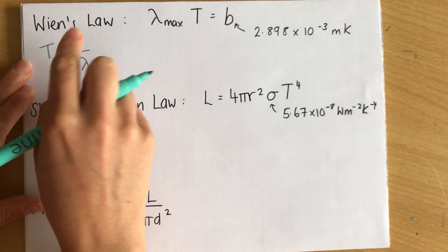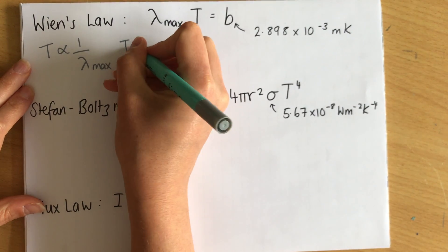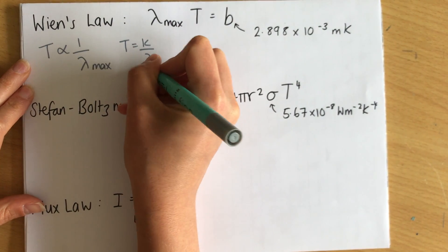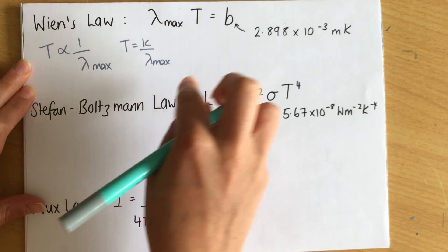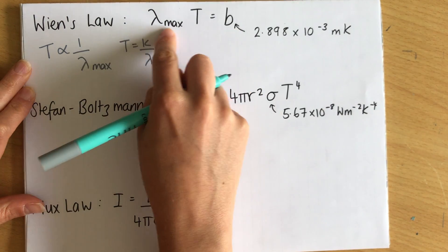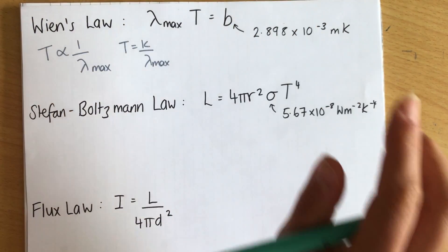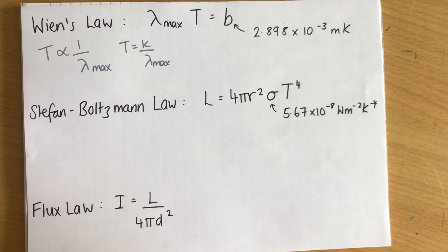Now I can rewrite this by saying that T equals a constant over lambda max, or I can rearrange it to say lambda max times T equals B, where B is the constant for this, and it's called the Wien's constant, or Wien's displacement constant, and it has a value of 2.898 times 10 to the minus 3, not millikelvin, this is meters kelvin.